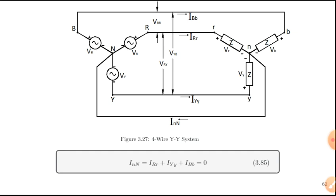In transmission lines with higher voltages, using a 4-wire system is very costly because you use four wires and four lines. So they only use a 3-wire system. The application of 3-wire is for higher power transmission lines, while in household distribution systems with lower loads, we use 4-wire.